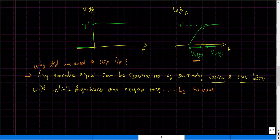A second question: how do we make this system brisk? That is, how do we reduce the natural response component V_n(t) so that the system reaches its final state at the earliest? To answer this question, we need to know about frequency response.